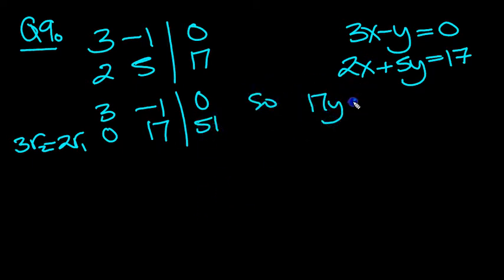17y equals 51, which tells us that y is 51 over 17, which is 3. That's fine.